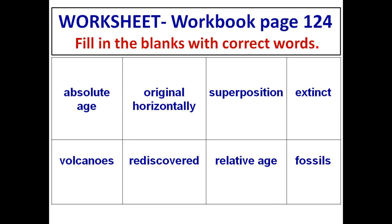Page 124 contains a table with words given, and from these words you have to choose the appropriate word to fill in the blanks given below. The eight words are: absolute age, original horizontally, superposition, extinct, volcanoes, rediscovered, relative age, and fossils. We are going to use these words in the appropriate sentences to complete them.